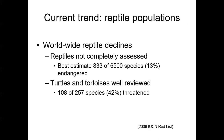How does it relate to reptiles? Worldwide reptile declines are not as completely assessed as for amphibians. Our best estimate is that 13% are endangered. The group that's probably the most studied is our Chelonians — turtles and tortoises — by far the best reviewed. Approximately 42% of our Chelonians are currently threatened.